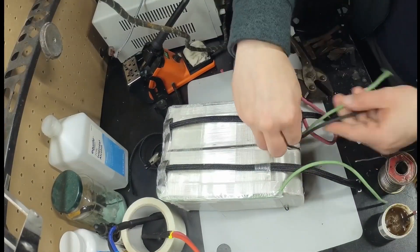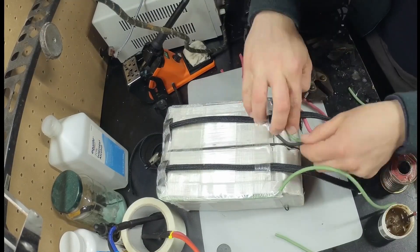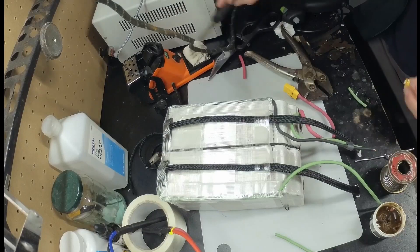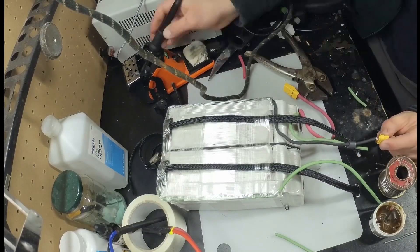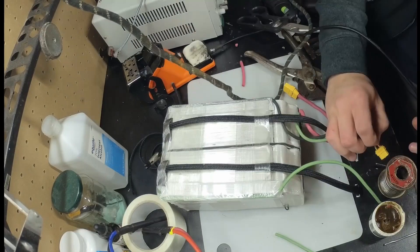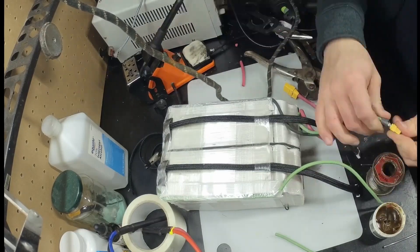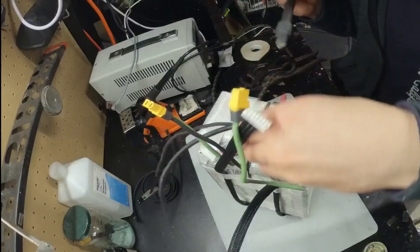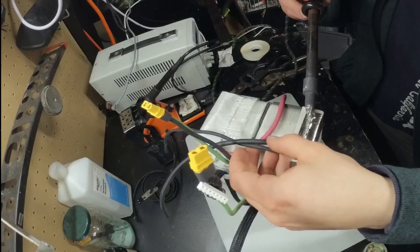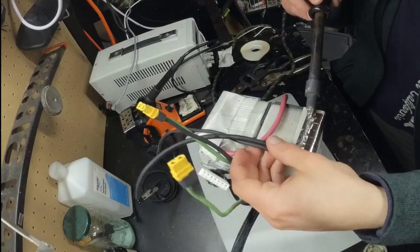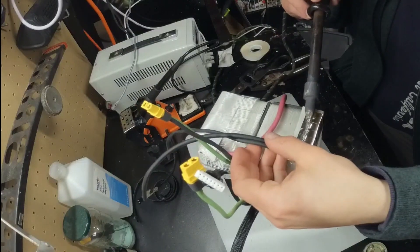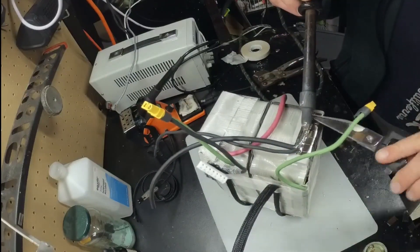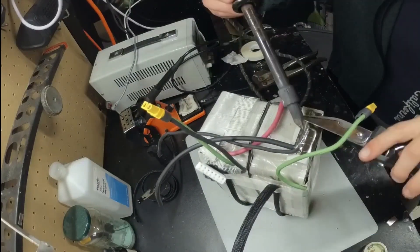Since there will be no internal BMS, I will be treating these as two separate 6S packs while charging. Therefore, I added two XT60 connectors to either side along with two 6S balance leads. I will be charging this pack with ISDT-Q8 smart chargers.